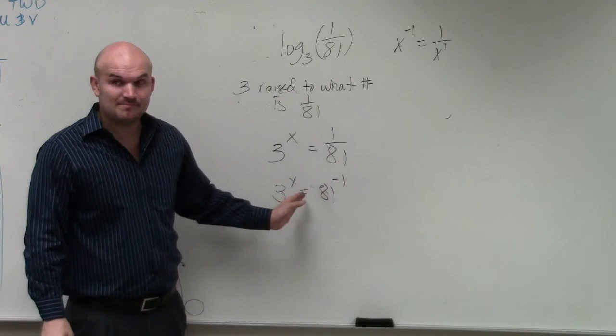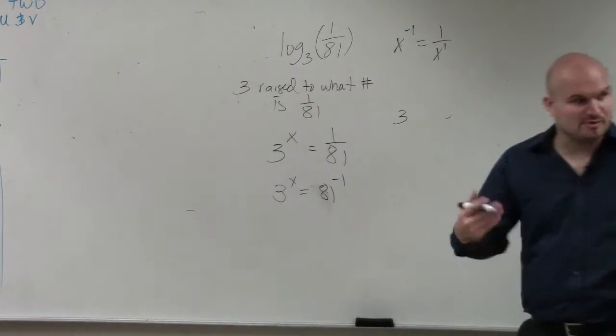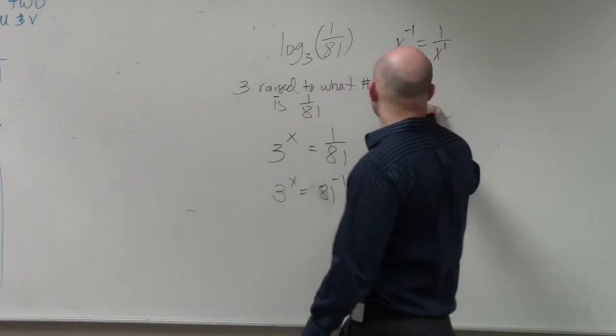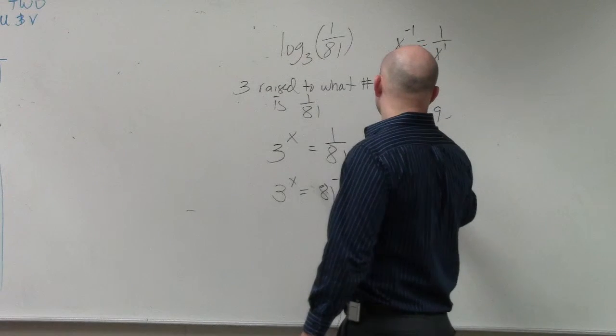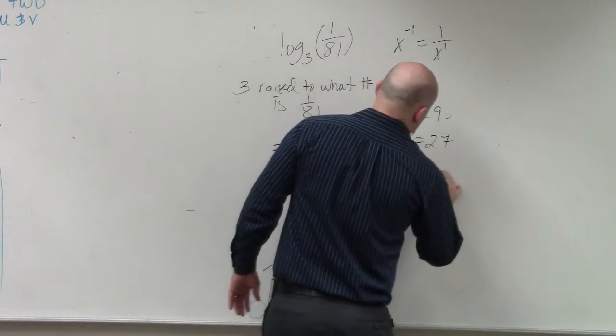Now, 3 and 81 are not the same base, but let's go back. Since we've been practicing these with our radicals: 3 squared is 9, 3 cubed is 27, 3 to the fourth power is 81.